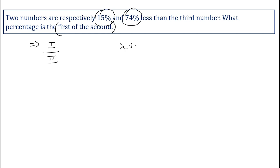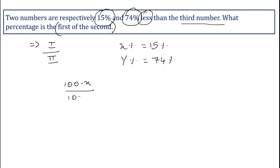That is, x percent equals 15 percent — the first number — and y percent equals 74 percent — the second number. These two numbers are less than the third number, so we'll use the formula: (100 minus x) upon (100 minus y) into 100 percent.